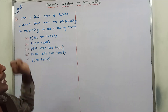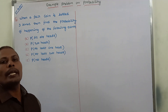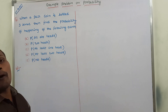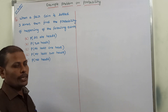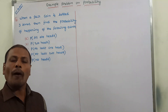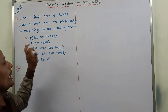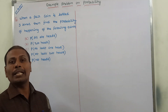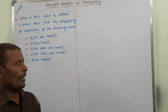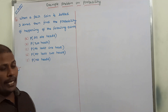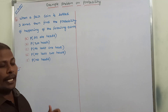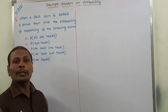The given problem is: when a fair coin is tossed three times, find the probability of the following events. First, probability of getting all heads. Second, probability of getting two heads. Third, probability of getting at least one head. Fourth, probability of getting at least two heads. Fifth, probability of getting no heads.